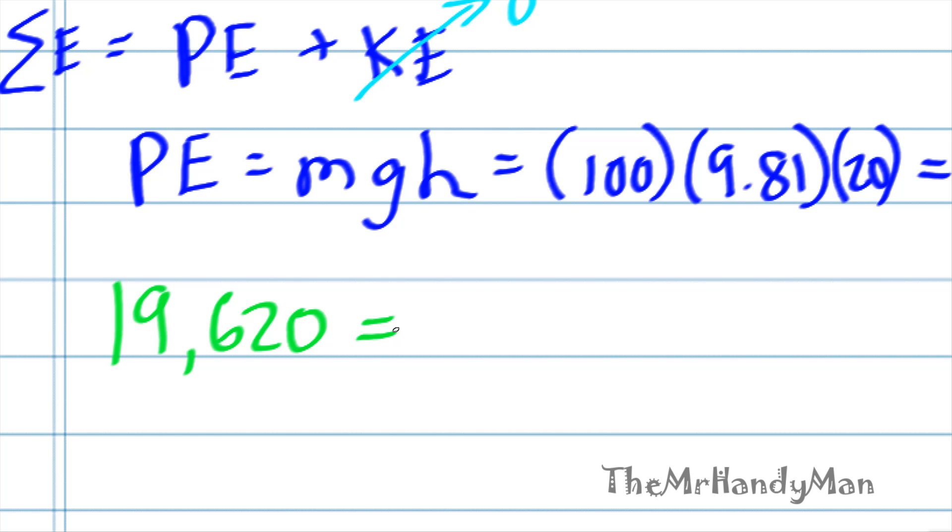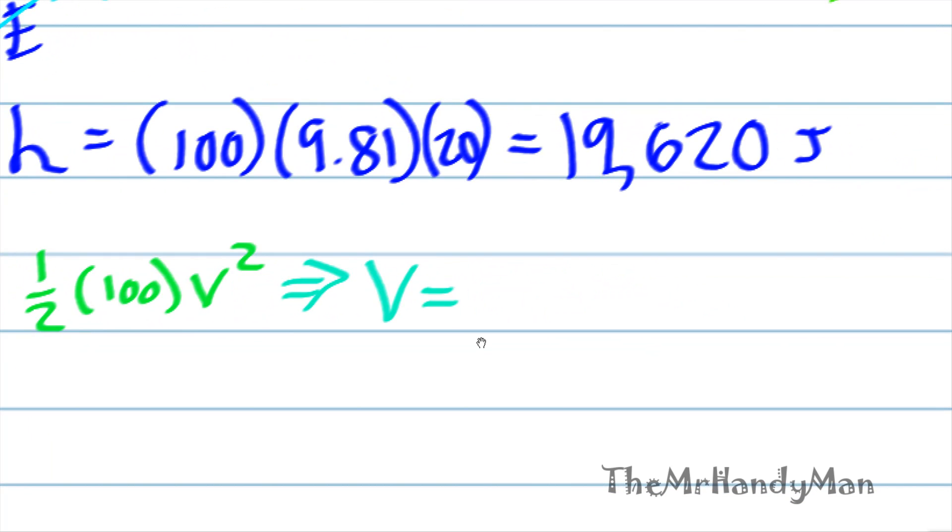That means that will equal kinetic energy, or one-half M, which is 100, V squared. And when we solve for that, V is equal to 19.81 meters per second.